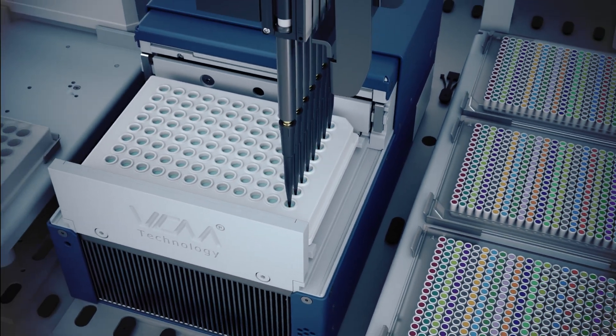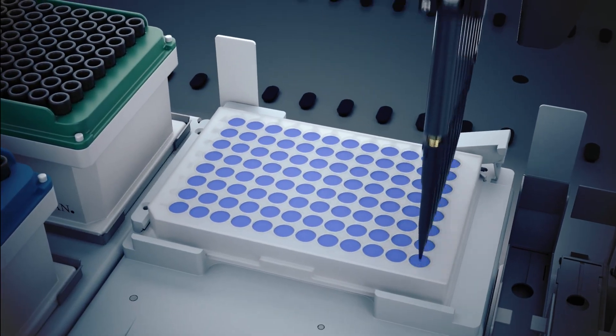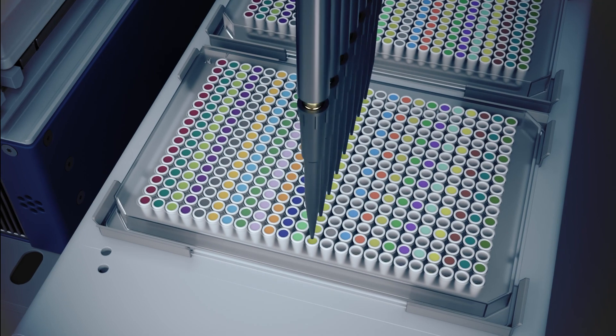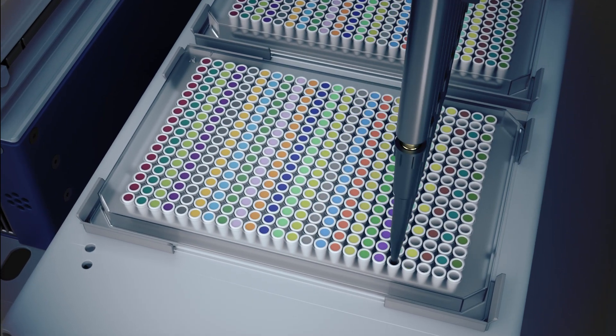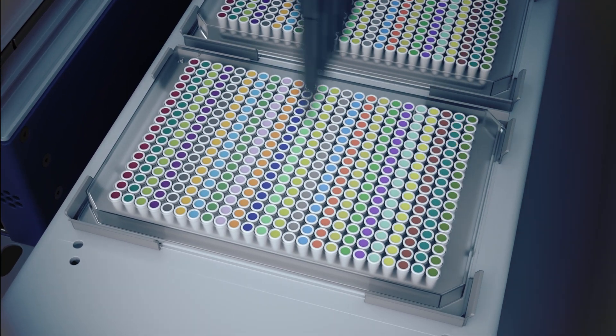PCR products from step one are diluted. This removes potential inhibitory and cross-reacting substances. Each diluted sample is aliquoted across multiple wells of the step two plate.